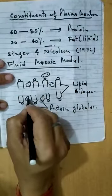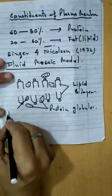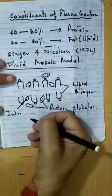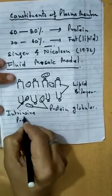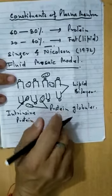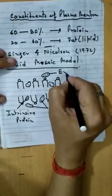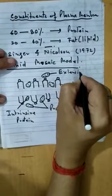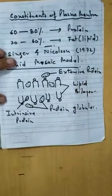The proteins which are intermingled within the bilayer are known as intrinsic proteins. Those present on the outside are extrinsic proteins. This is the model of the Plasma Membrane.